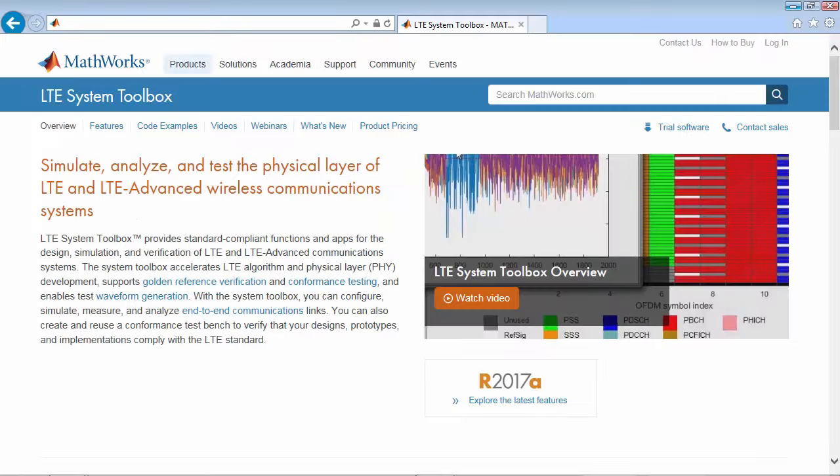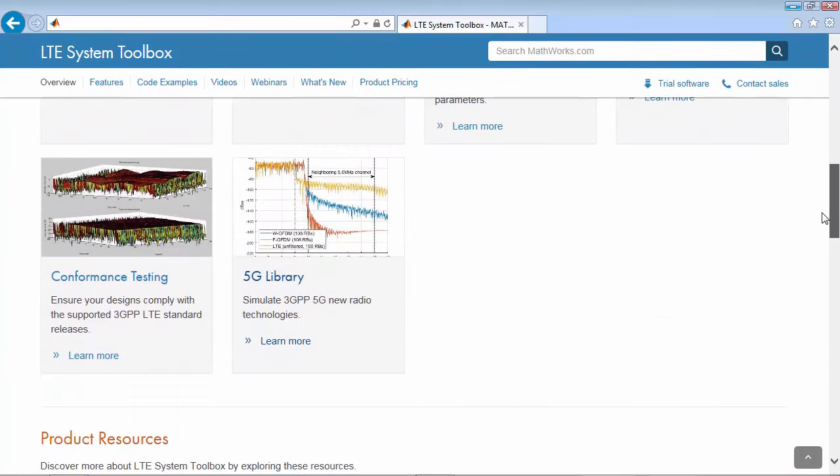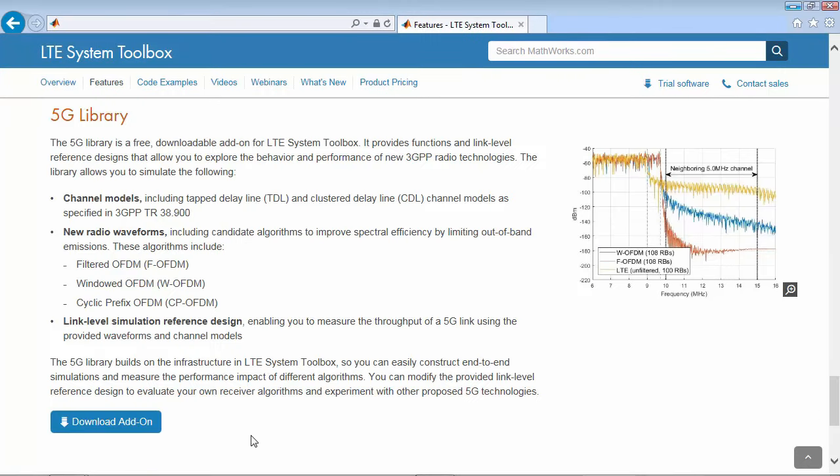To learn more about the MathWorks 5G library, just go to LTE system toolbox product page at mathworks.com/LTE. Then scroll down and enter the 5G library tile. By clicking on the download add-on button, you can then download and install the 5G library.